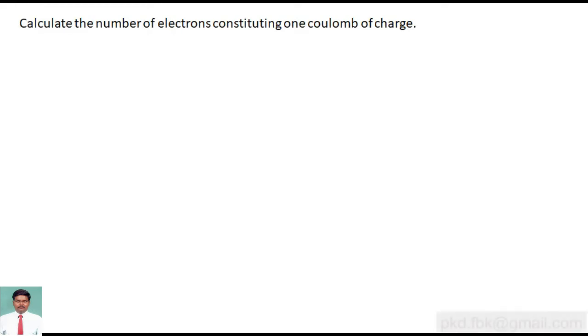Calculate the number of electrons constituting one coulomb of charge. To find how many charges one coulomb contains, we are going to use a condition called the quantization condition.